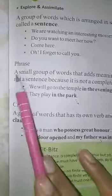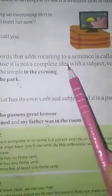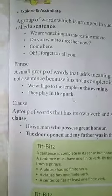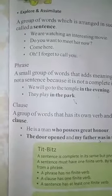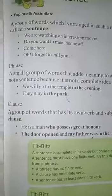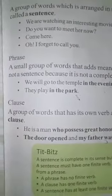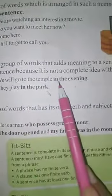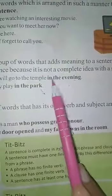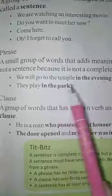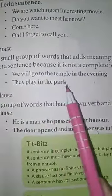Next, phrase. A small group of words that adds meaning to a sentence is called a phrase. Students, a phrase does not have subject and verb. Or you can say, a phrase is a group of words without any subject and verb combination. See the examples — 'in the evening' does not have any subject and verb. And in the next example, 'in the park'.